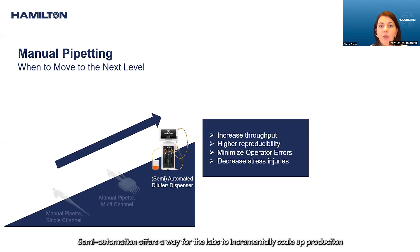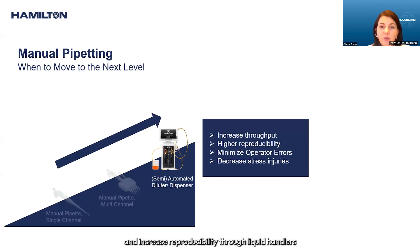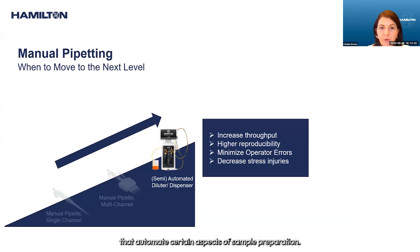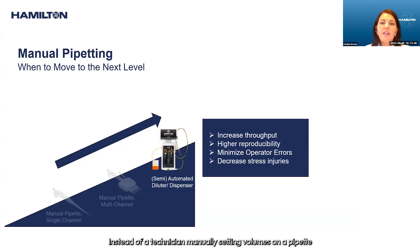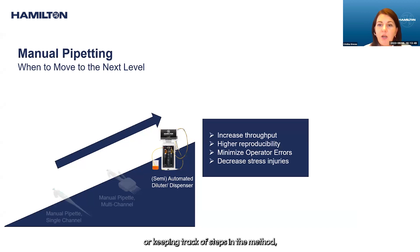Why should you choose semi-automation? Semi-automation offers a way for labs to incrementally scale up production and increase reproducibility through liquid handlers that automate certain aspects of sample preparation, instead of a technician manually setting volumes on a pipette or keeping track of steps in the method.